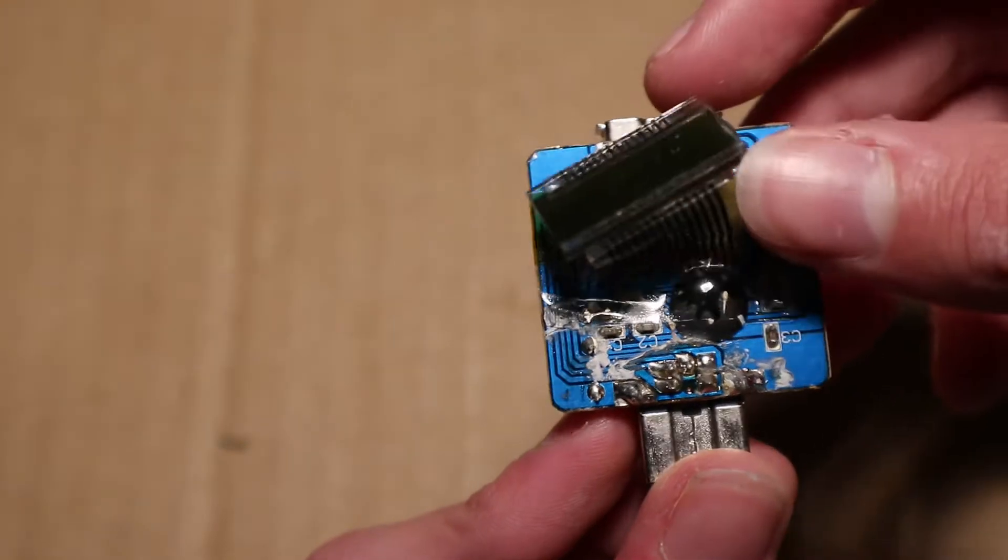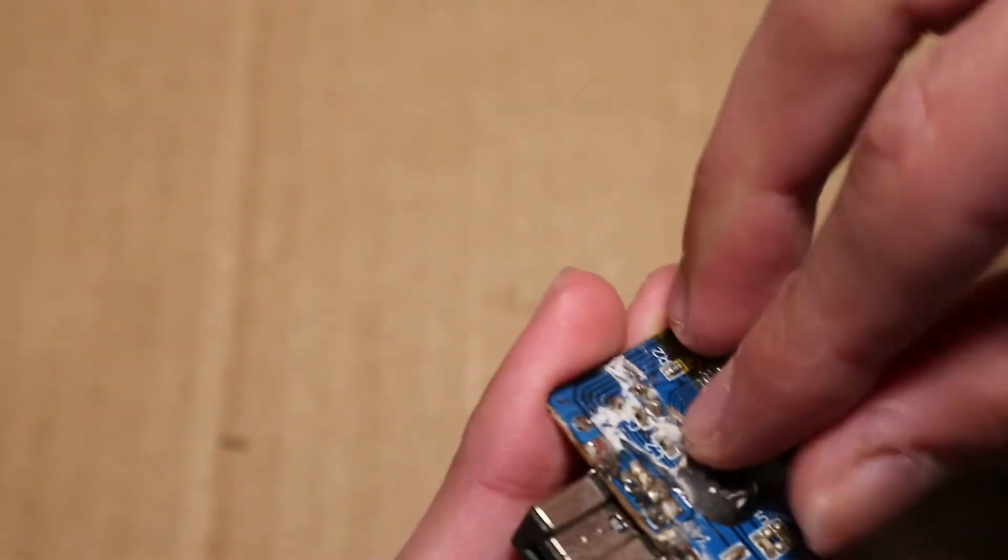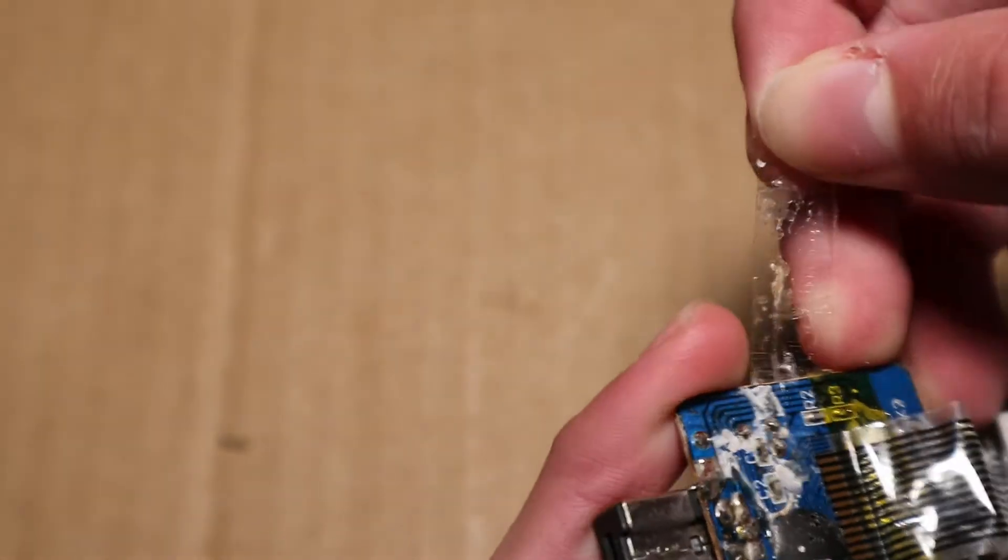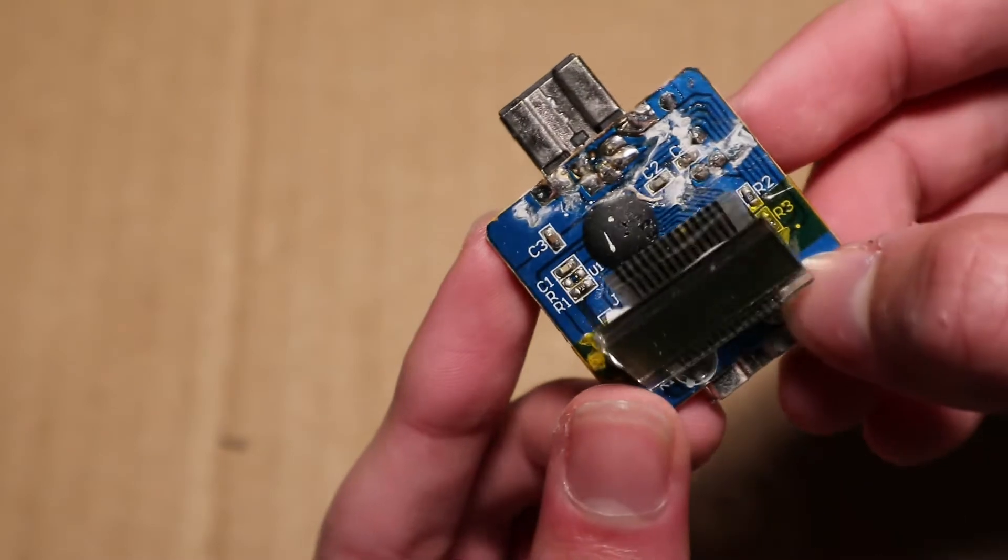Underneath the LCD, there is a chip inside of this blob. There's a piece of tape covering this. There's a few resistors and capacitors also. And here are the buttons.